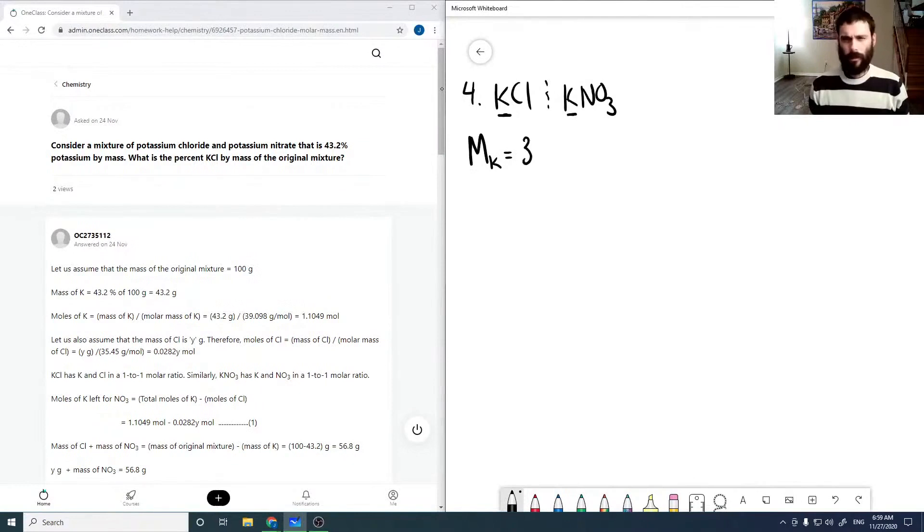So that's our potassium, that's our chlorine, that is our nitrogen. There should be more than one zero in there, and that is our oxygen.